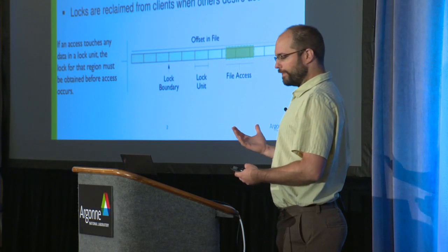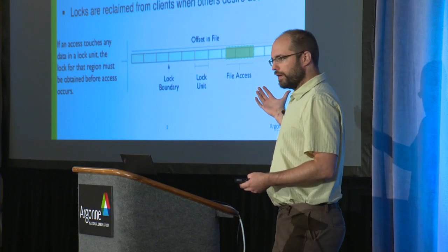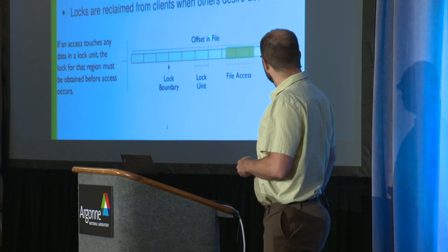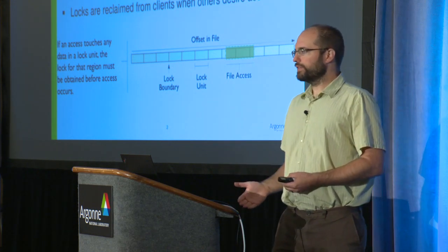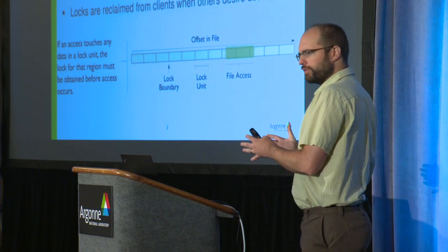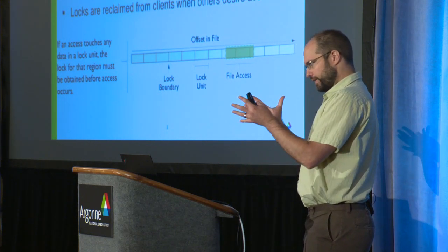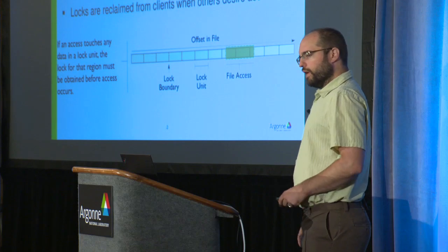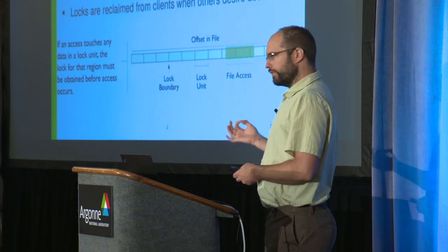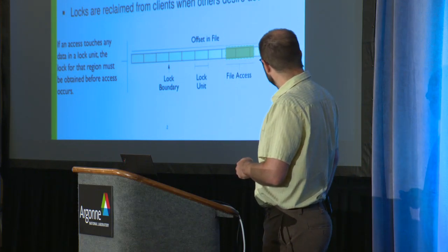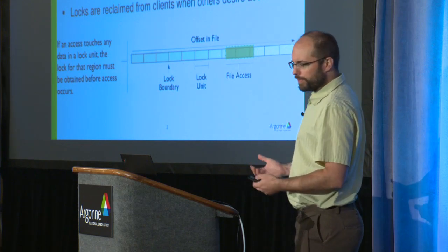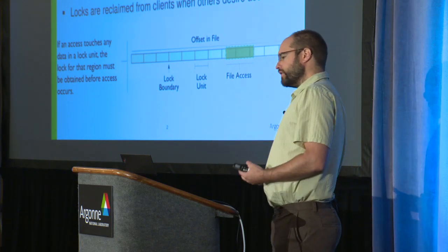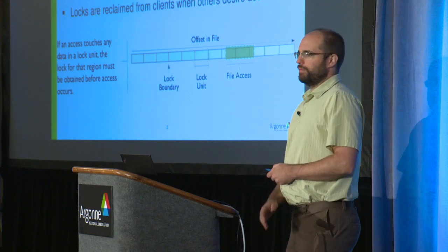The problem comes if the file access spans multiple lock boundaries. In this case, we've got a file access hitting three different lock boundaries, even though the data may be no bigger than a single lock entity — you're going to need to acquire three locks. Two of those locks are going to be shared with somebody else, probably. And this is where the performance problem can really hit you.